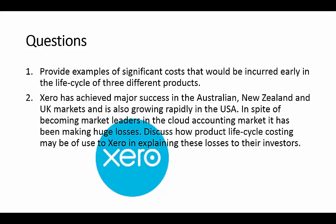So two questions. Question one: provide examples of significant costs that would be incurred early in the life cycle of three different products. Question two: Xero has achieved major success in the Australia, New Zealand and UK markets and is also growing rapidly in the United States. In spite of becoming market leaders in the cloud accounting market, it has been making huge losses. Discuss how product life cycle costing may be of use to Xero in explaining these losses to their investors.